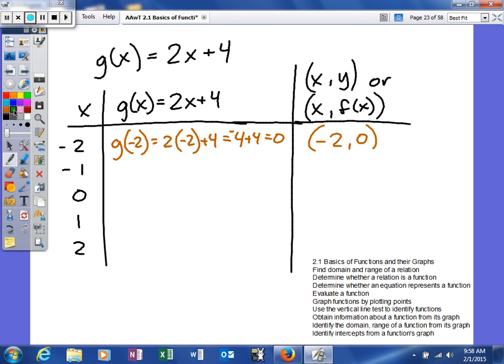For the next one, we'll say g of negative 1 is going to be 2 times negative 1 and then plus 4. So we get negative 2 plus 4, so that's equivalent to positive 2, so that will be negative 1 comma 2.